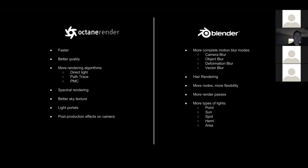Cycles also has more types of lights. Octane Render essentially uses sky textures or mesh lights to light a scene — that's it. In Cycles, you can also use sky textures, HDRIs, and mesh lights, but you can additionally use normal lights positioned however you want. For clarification, Octane can use HDRIs — it's called sky texture, but it's essentially the same. So in Octane, you use HDRIs and mesh lights, while Cycles offers much more flexibility.